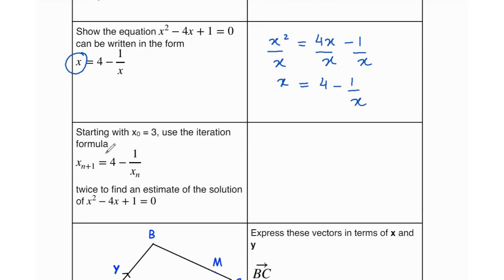Then it says starting with x₀ equals 3, use iteration formula xₙ₊₁ equals 4 minus 1 over xₙ twice to find an estimate of the solution of the quadratic equation. When n equals 0, that's going to be x₁ equals 4 minus 1 over x₀, which is going to be 4 minus 1 over 3, and that gives us 3.666 recurring.